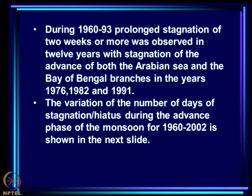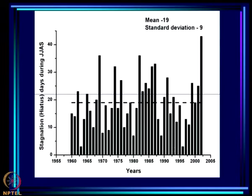There have been many studies of hiatus in the monsoon. During 1960 to 1993, prolonged stagnation of 2 weeks or more was observed in 12 years, with stagnation of the advance of both Arabian Sea and Bay of Bengal branches in 1976, 1982, and 1991. The combined hiatus days are plotted, and 2002 stands out with more than 40 days of hiatus during the onset phase - the result of three separate stagnation periods.